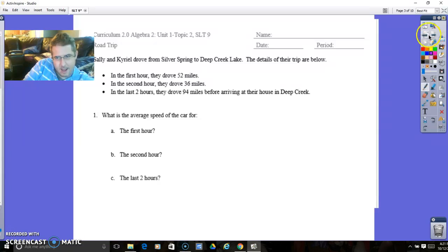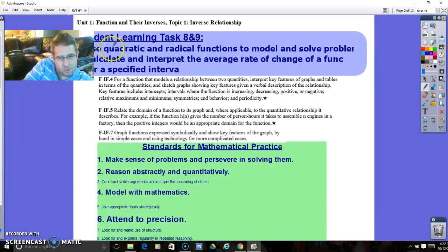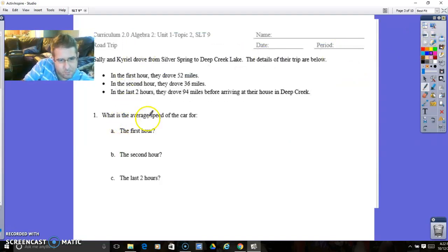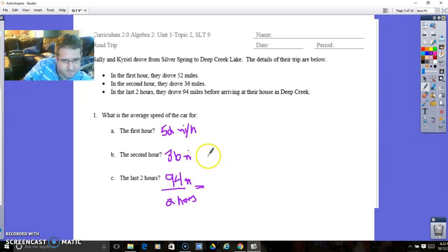So SLT number 9 is calculating and interpreting average rate of changes. What is the average rate of a car for the first hour? In the first hour they drove 52 miles, so that's 52 miles per hour. In the second hour they drove 36, so that would be 36 miles per hour. Now in the last two hours they drove 94 miles, so that's 94 miles per two hours, which is a grand total of 47 miles per hour.